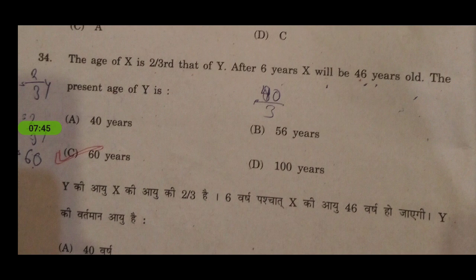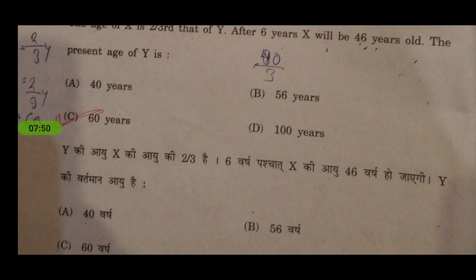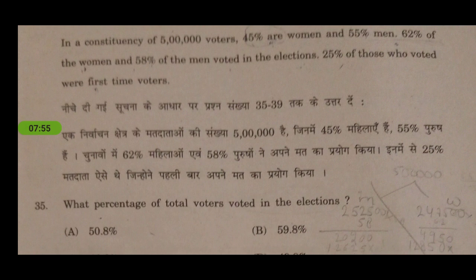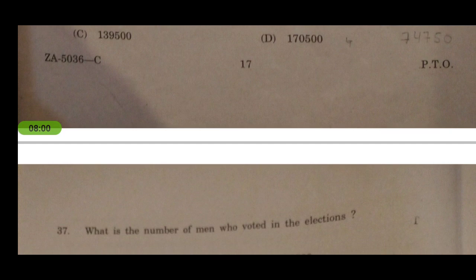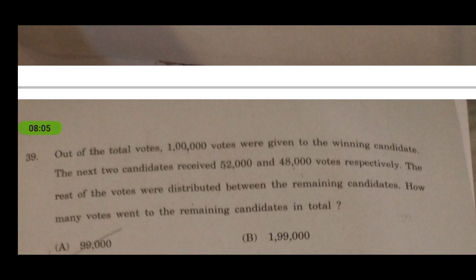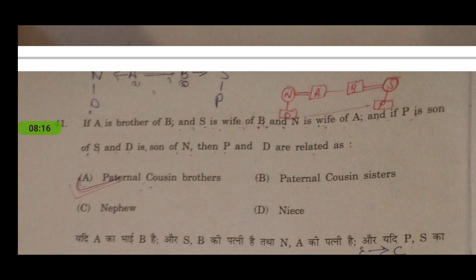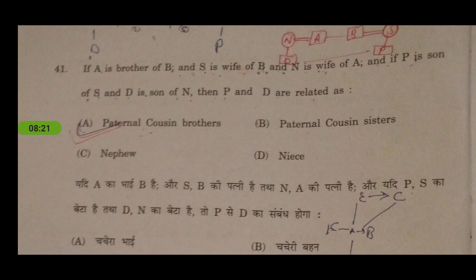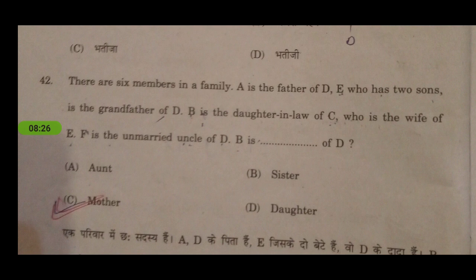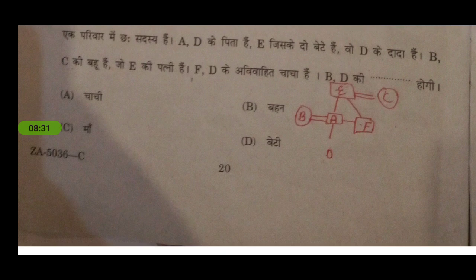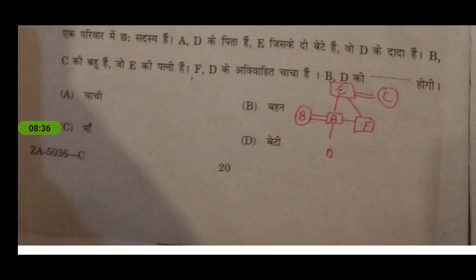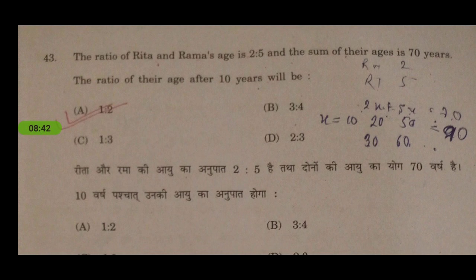The age of X is two-thirds that of Y; after 6 years X will be 46 years old — the present age of Y is 60 years. Next are more reasoning questions; you can pause the video to solve them. There are also blood relation questions with solutions provided, including techniques to solve them in less time.